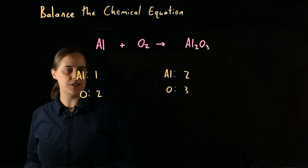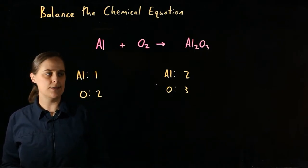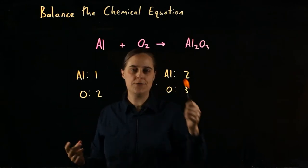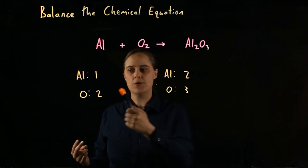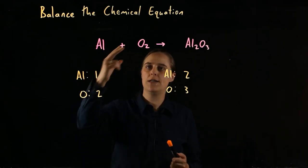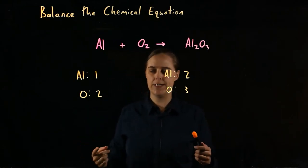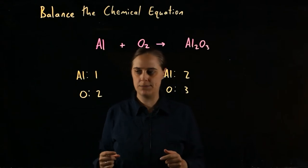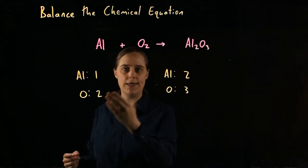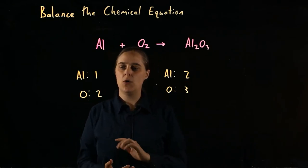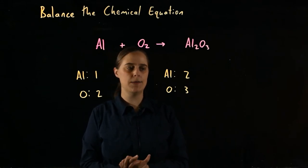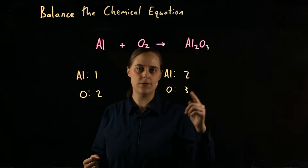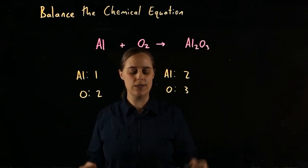Let's look at oxygen. This is trickier to balance because when you see two versus three, keeping in mind that we want small whole numbers, we don't want to multiply two by one and a half. We do not want one and a half molecules of something. When you see numbers like two versus three, you may need to multiply both of them by something. You are looking for the least common multiple — for two and three, that's six. Two times three is six, three times two is six.